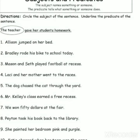Mason and Sate is known as a compound subject because the sentence contains two subjects. Next: 'Lassie and her mother went to the race.' The subject is Lassie and her mother — again a compound subject — and the remaining part is the predicate. Next: 'The dog chased the cat through the yard.' The sentence is about the dog, so the subject is 'the dog.' Next: 'Mr. Kelly's class had a free recess.' Mr. Kelly's class is the subject since the sentence is all about Mr. Kelly's class.